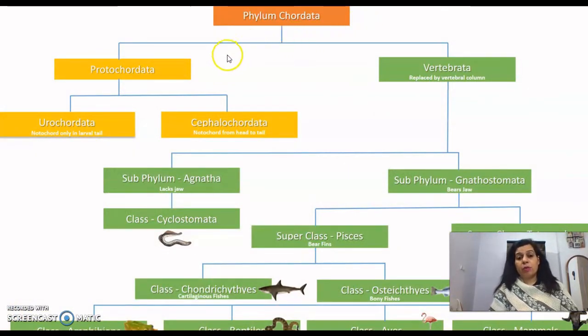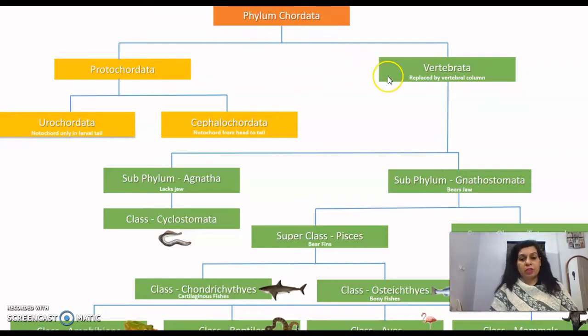Phylum Chordata is divided into two main groups: Protochordates and Vertebrates.